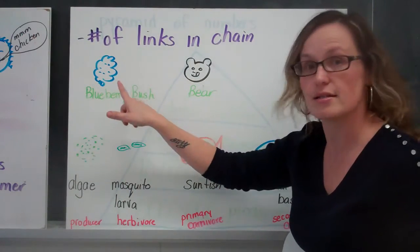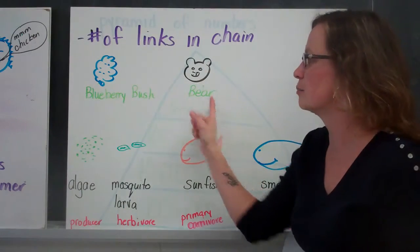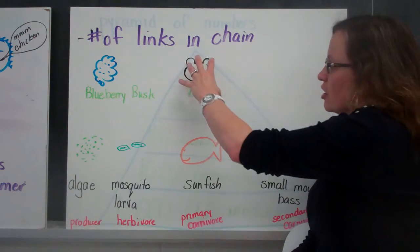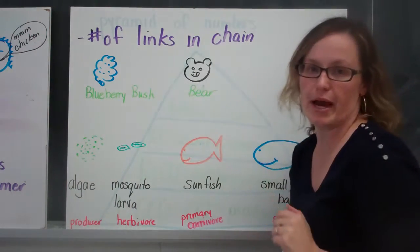It's a blueberry bush, and a bear. So the bear eats the blueberry bush. And that's the end of that chain because there isn't another consumer above the bear.